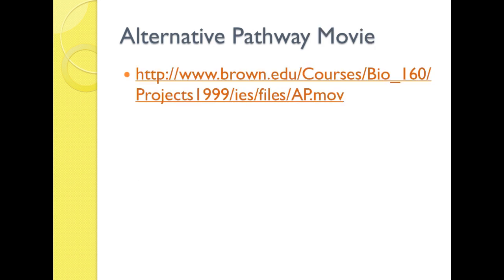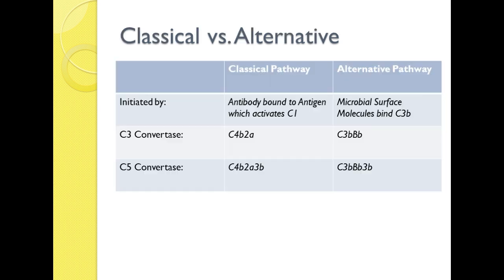The C5b molecule remains associated with the membrane and associates with C6 through C9 to form MAC — the final destruction. For the classical versus the alternative pathways, know the differences between not only how they're initiated, but also the difference between the C3 and C5 convertases of the two.